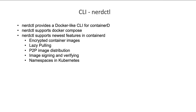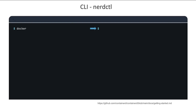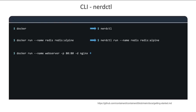It also supports lazy pulling of images, P2P image distribution, image signing and verifying, and namespaces in Kubernetes, which are not available in Docker. The nerdctl tool works very similar to Docker CLI — instead of Docker, you simply replace it with nerdctl. For example, instead of running the Docker run command to create a container, you could just use the nerdctl run command. Similarly, for port mappings using the -p option, you can do the same with nerdctl — simply replace Docker with nerdctl.